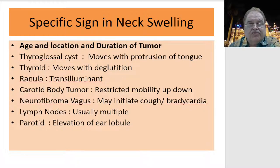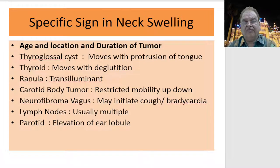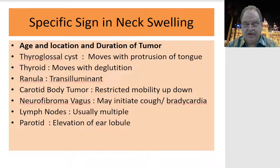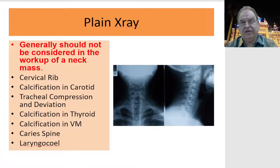Thyroglossal cyst moves with protrusion of the tongue; the thyroid moves on deglutition. Carotid body tumor and neurofibroma of the vagus do not move vertically. Lymph nodes are usually multiple. The parotid swelling elevates the earlobe. Plain X-ray, though not very helpful, can sometimes show the cervical rib, calcification, tracheal compression or deviation, and calcification in the thyroid.